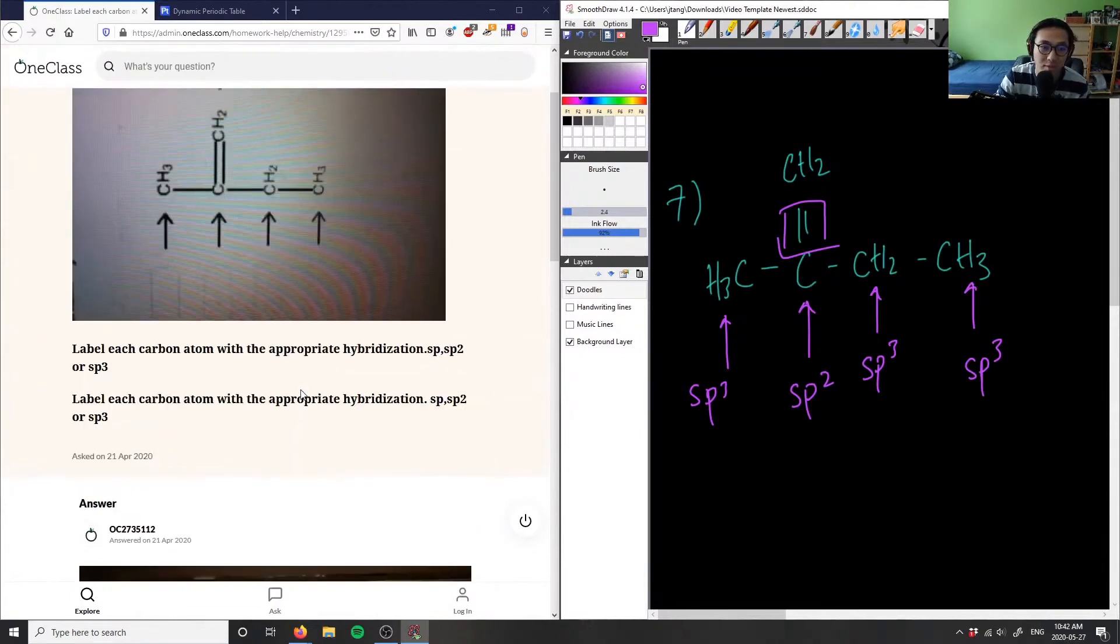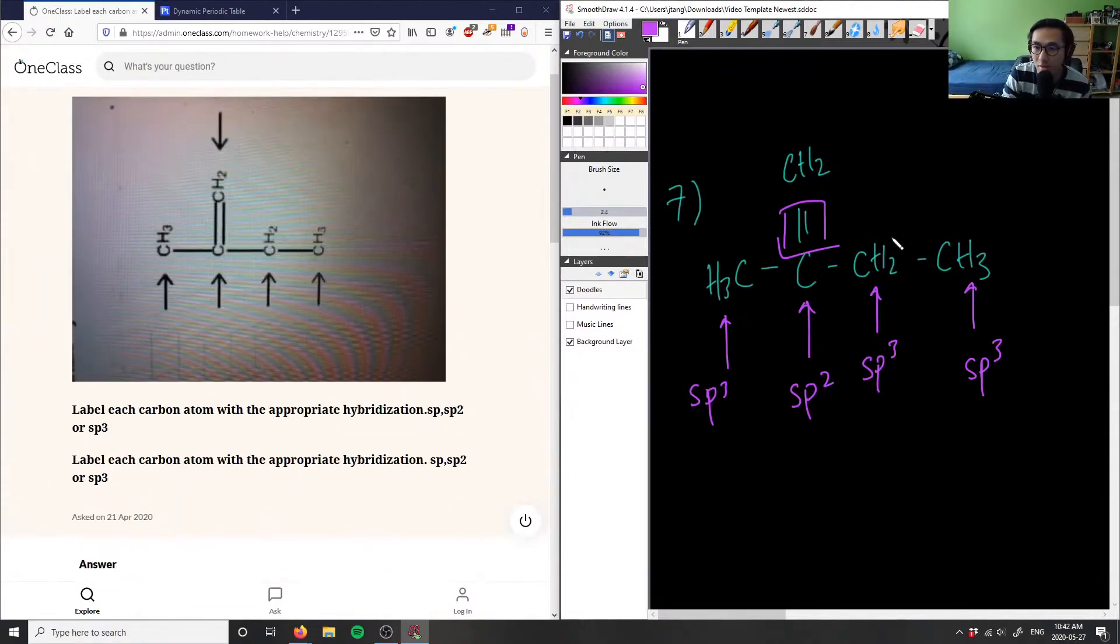And this carbon is also sp2. Did I - oh, I think they ask for this one as well. This here is also sp2 because again the double bond makes it so that it contains one pi bond and the rest are the sigma bonds, whereas in the sp3 hybridization they're all single bonds and no pi bonds here.